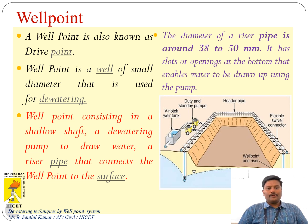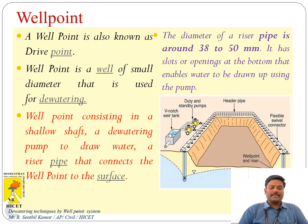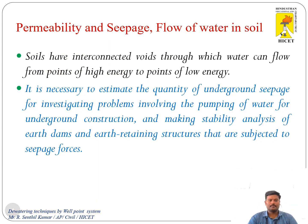A well point is also known as a dry point. A well point is a well of small diameter that is used for dewatering, consisting of a shallow shaft, a dewatering pump to draw water, and a riser pipe that connects the well point to the surface. The diameter of the riser pipe is around 38 to 50 mm. It has a slot or opening at the bottom that enables water to be drawn up using the pump.